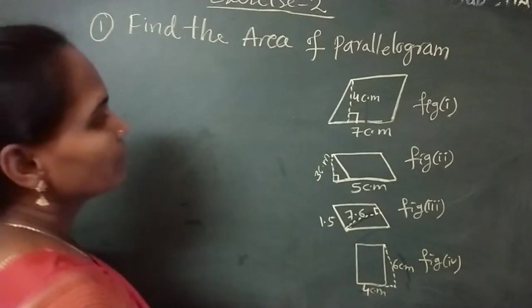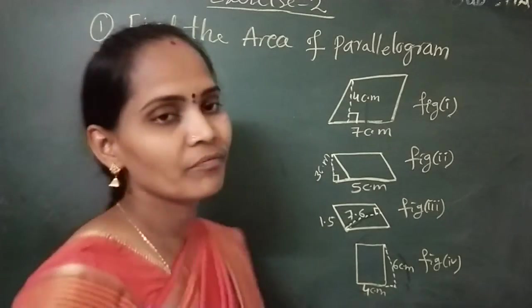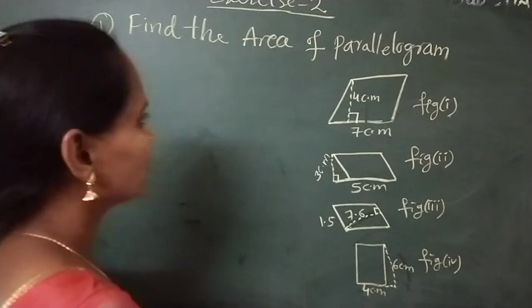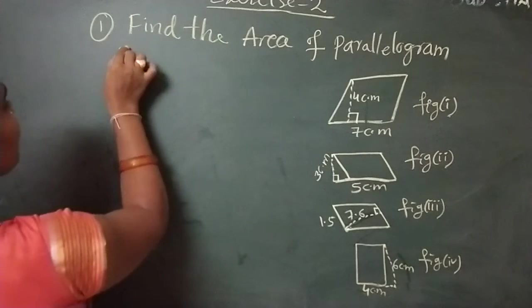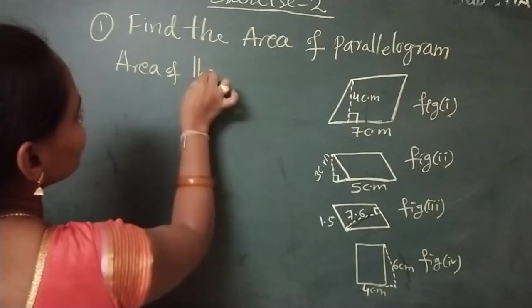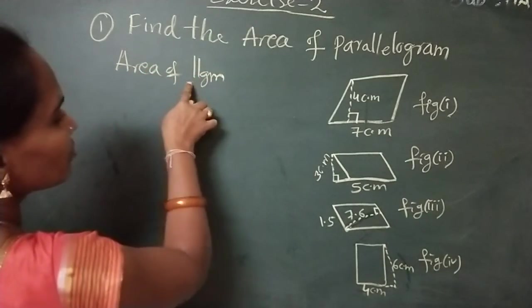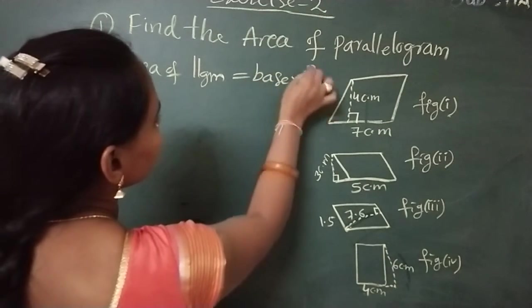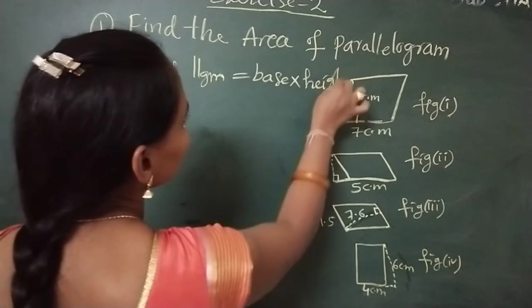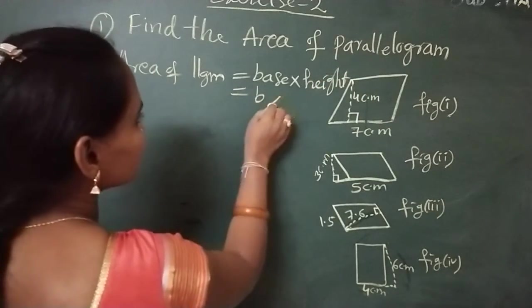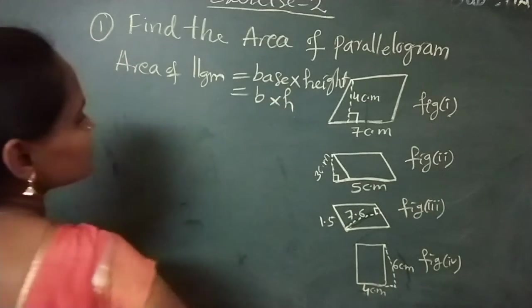First of all, before going to find the area of parallelogram, first you have to know what is the formula for that. So, area of parallelogram - this is the short name, A for parallelogram. Area of parallelogram equals base into height. Base into height. We can write as b for base, h for height. This is the formula for area of parallelogram.